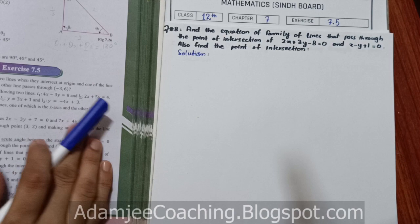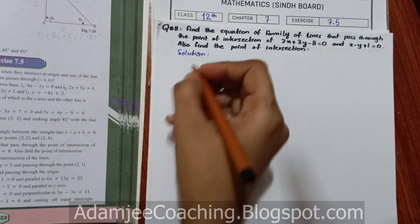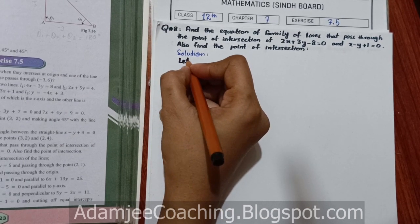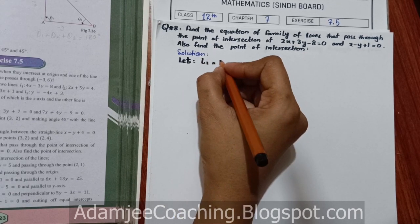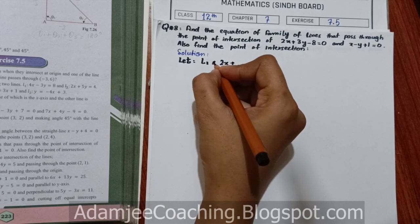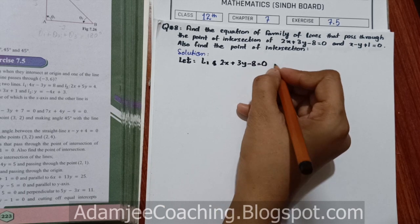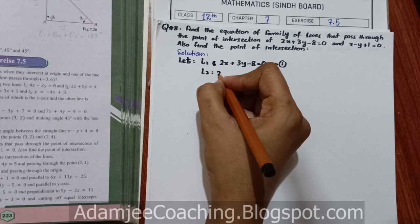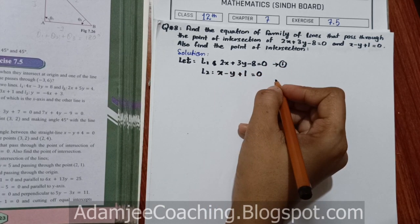We have two equations given. Let L1 equals 2x plus 3y minus 8 equals to 0 — this is equation number 1. And L2 is x minus y plus 1 equals to 0 — this is equation number 2.